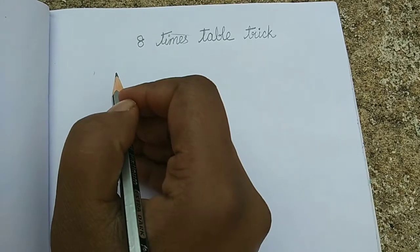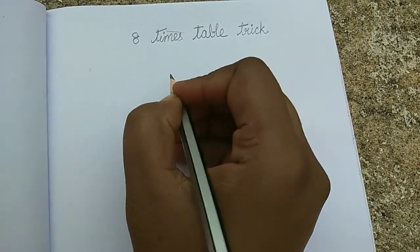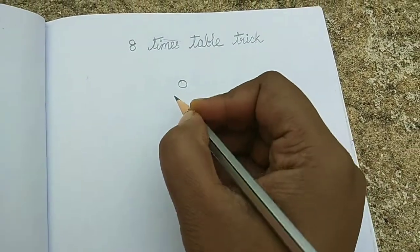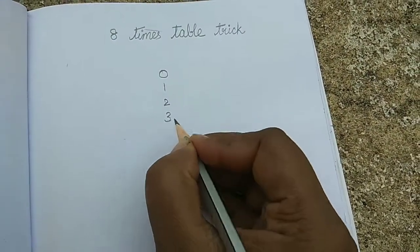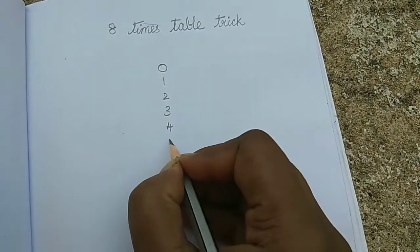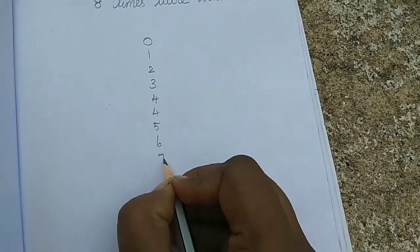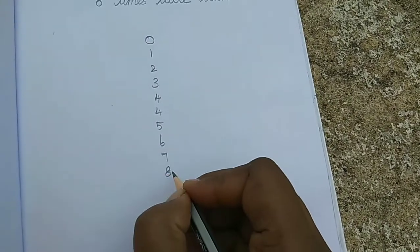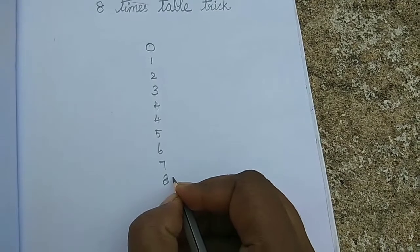Now let's see a trick with the 8 times table. First, you have to write 0, 1, 2, 3, 4, and again 4, 5, 6, 7, 8. Now we have to write even numbers from bottom to top.